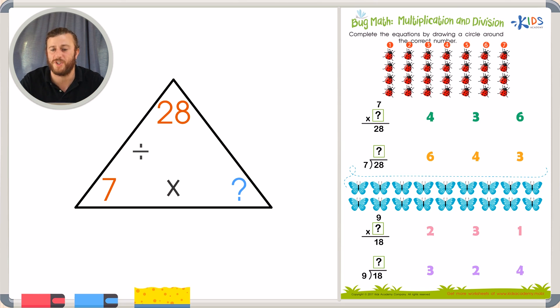Let's see how many rows there are. There are 1, 2, 3, 4 rows. So now I'm already starting to think maybe that missing number in my fact family is 4. Because I have a total of 28. I know that there are 7 columns and there are 4 rows.